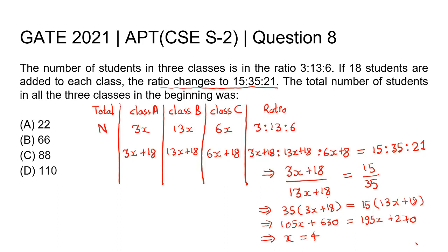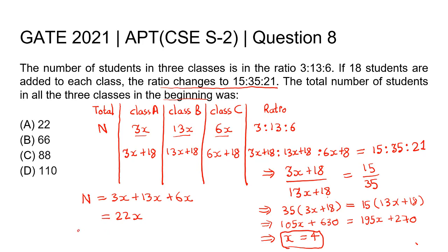Now we have to find out the total number of students in all three classes in the beginning. In the beginning, class A had 3x students, class B had 13x students, and class C had 6x students. So the total students in the beginning, n, is equal to 3x plus 13x plus 6x, which is equal to 22x. And we found that x is equal to 4. Therefore, total students in the beginning are 22 into 4, equal to 88. So the correct answer is 88.